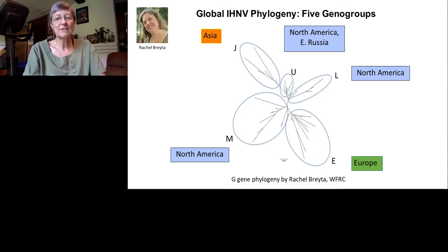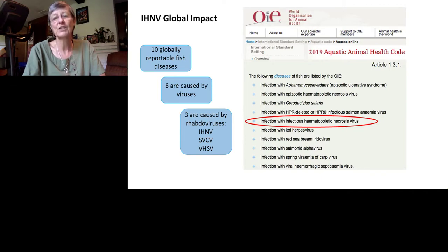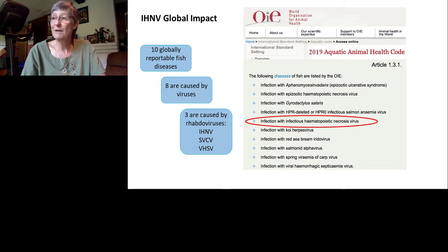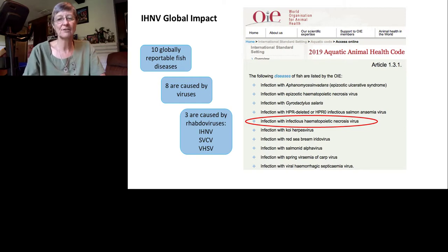IHNV is recognized as an important global fish pathogen. Under the 2019 OIE Aquatic Animal Health Code, there are ten globally reportable fish diseases, eight of which are caused by viruses. Of those eight, three are caused by rhabdoviruses — and one of those is IHNV. This highlights how significant rhabdoviruses are as fish pathogens.